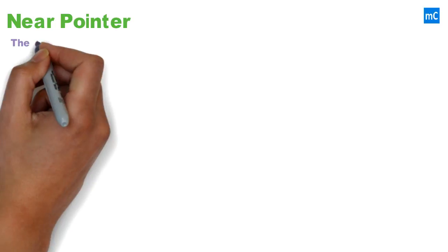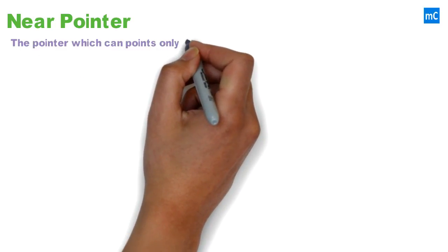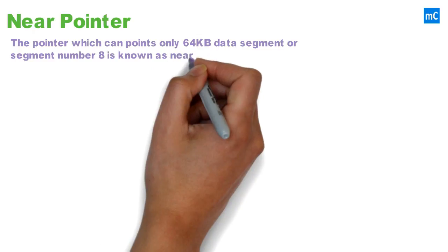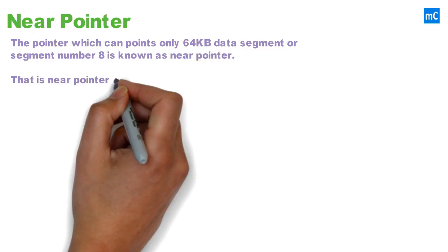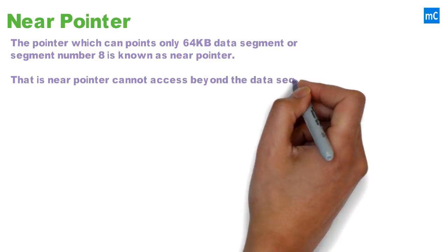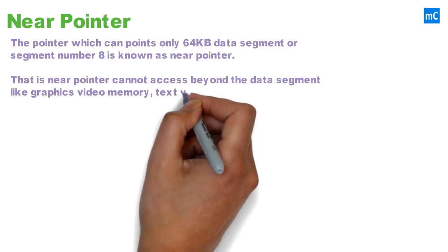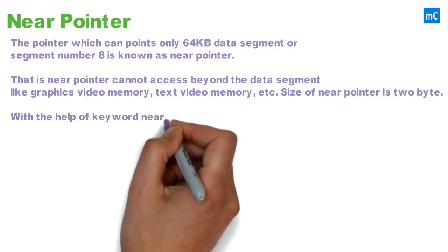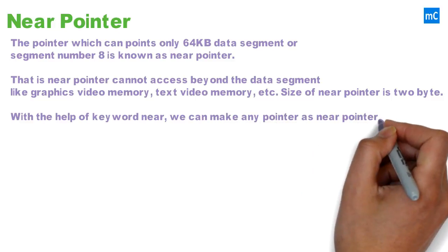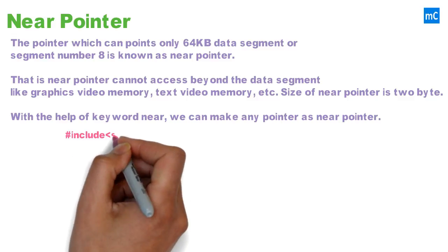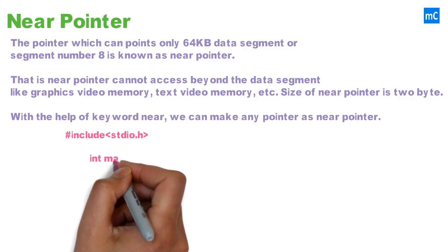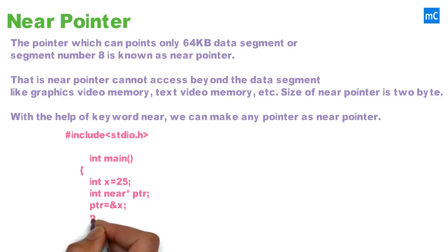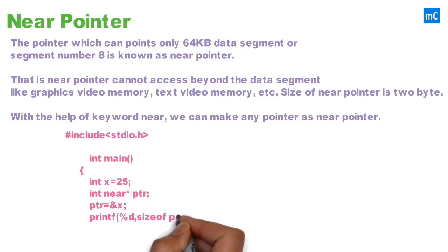Next is near pointer. A pointer which can point only within a 64 KB data segment is known as a near pointer. A near pointer cannot access beyond the data segment, such as graphics video memory or text video memory. The size of a near pointer is 2 bytes. Using the keyword 'near', we can declare any pointer as a near pointer. As we know the size of a near pointer is 2 bytes, the output will be 2.